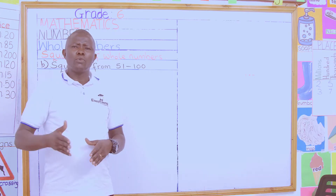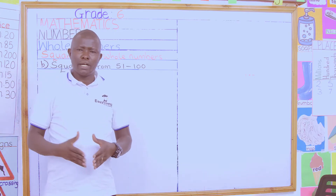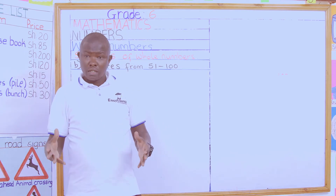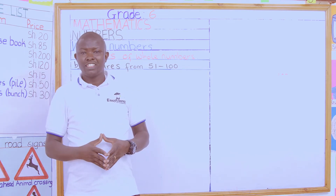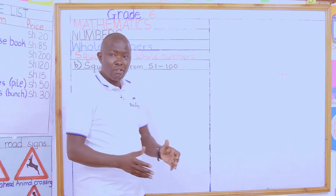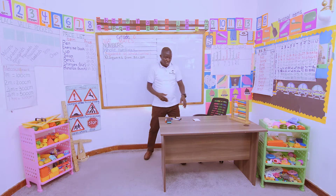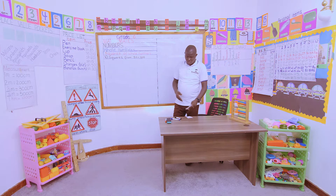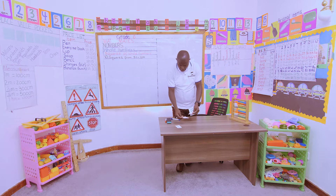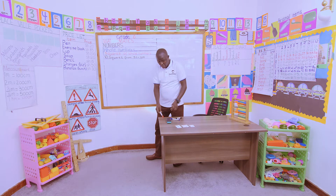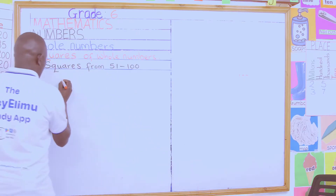When I take 1 multiplied by 1, I get a square number. 2 multiplied by 2 gives 4, which is also a square number. Today we'll continue from 51 to 100. I'd like you to go to your groups and form numbers from 51 to 100 using the number cards. First, we can form 100.